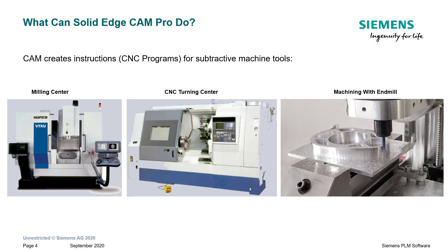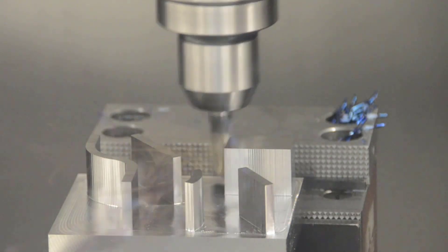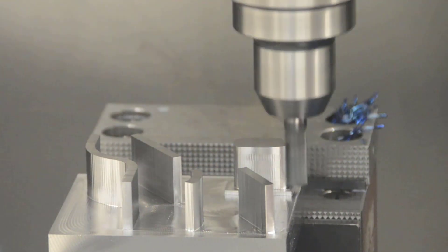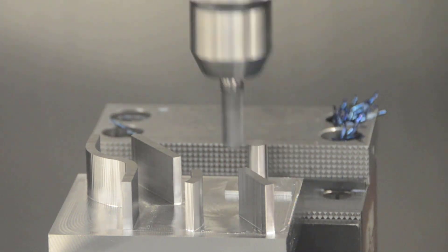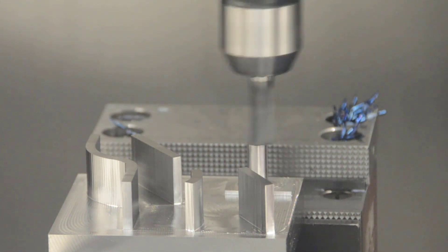In the middle, we have a turning center, which is used for machining cylindrical parts. The big difference between a milling center and a turning center is that in a milling center, the cutting tool is in motion, whereas in a turning center, the tool stays stationary and the part itself is rotating. And then on the right, you see some machining with an end mill. Take a look at this video — it shows some machining of a part on a CNC milling center.